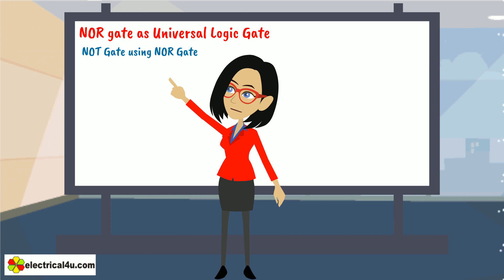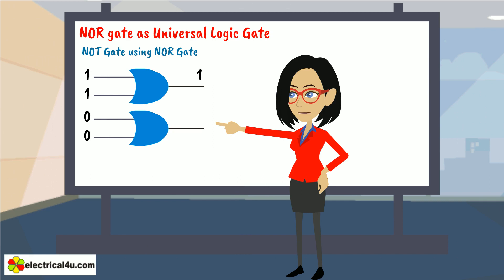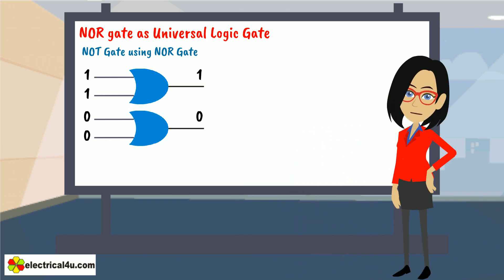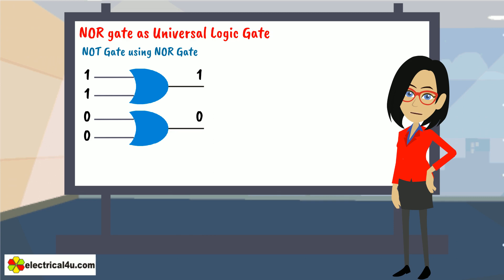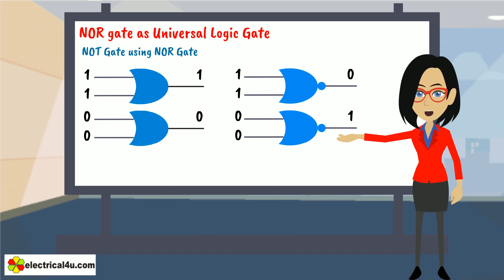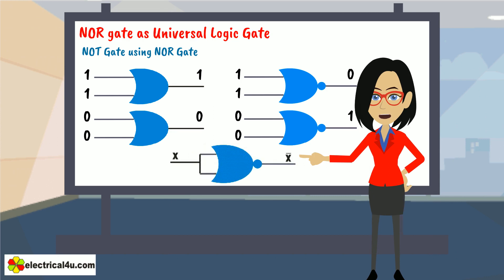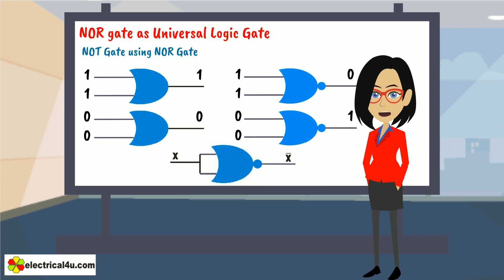We will try to realize a NOT gate using NOR gates. If both inputs of a two-input OR gate are 1, the output is 1; when both inputs are 0, the output is 0. Since the NOR gate is the reverse of an OR gate, when both inputs are 1 the output is 0, and when both inputs are 0 the output is 1. If we short-circuit both inputs of a NOR gate, we get NOT x, where x is either 0 or 1 — this is a NOT operation. So a NOT gate can easily be realized using a NOR gate only.